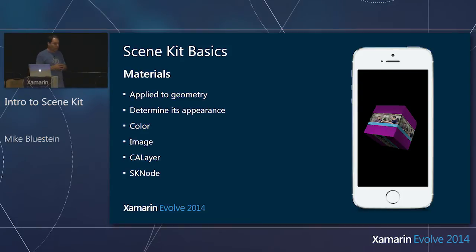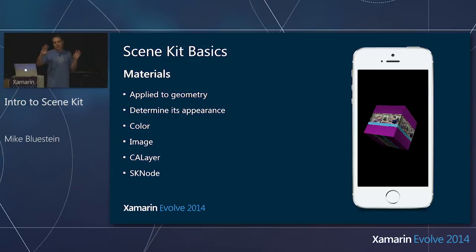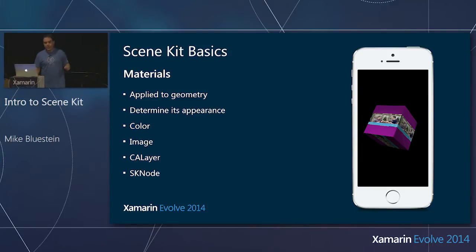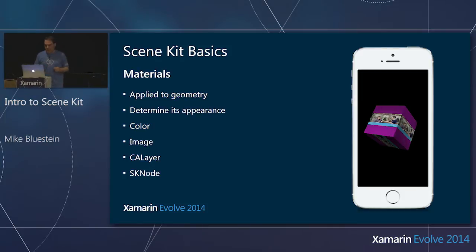I can even apply an SK node from SpriteKit — Apple's 2D game framework introduced in iOS 7 and enhanced in iOS 8. I could take a whole SpriteKit game and map it right onto a 3D surface. It's a little easier to do than dropping down into a CA layer. Either way, you can create some pretty neat effects with a lot of flexibility in the materials.